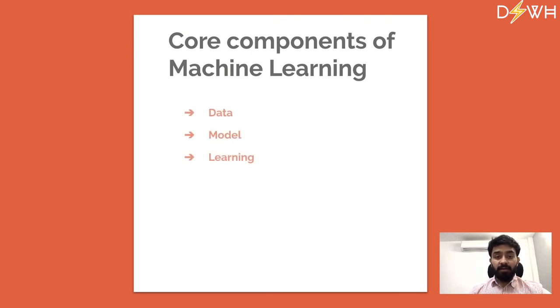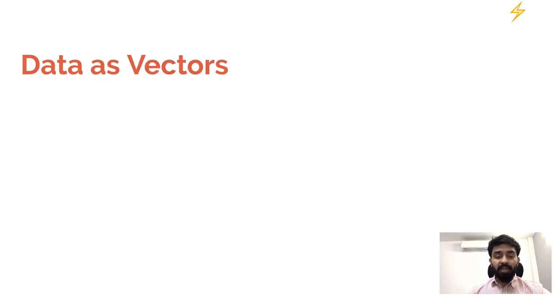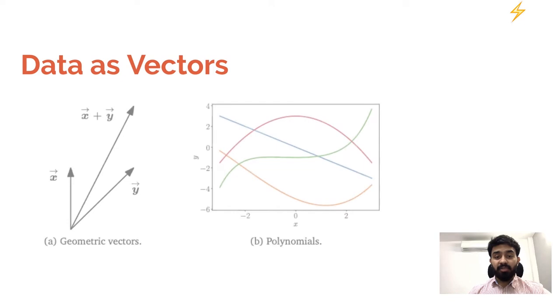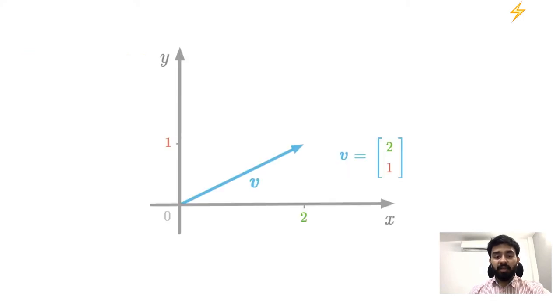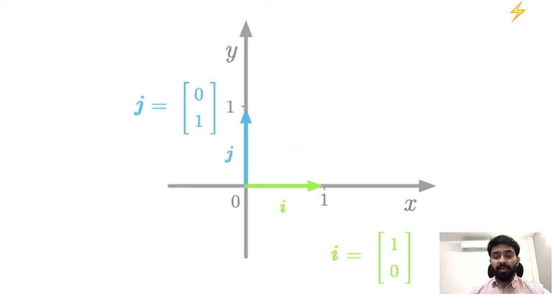When we talk about math for data science, it boils down to machine learning. Machine learning consists of three major core components: data, model, and learning. Machine learning is inherently data driven - data is at the heart of machine learning. The end goal is to extract useful hidden patterns from data.